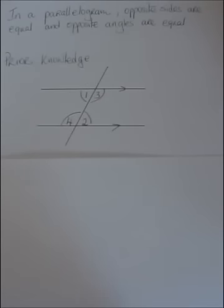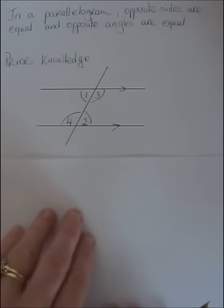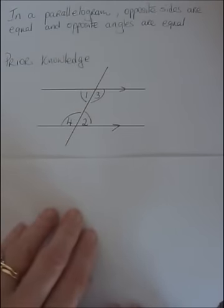In this theorem we want to prove that in a parallelogram, opposite sides are equal and opposite angles are equal. Before we start the theorem, let's revise. First of all, I need to know my alternate angles.